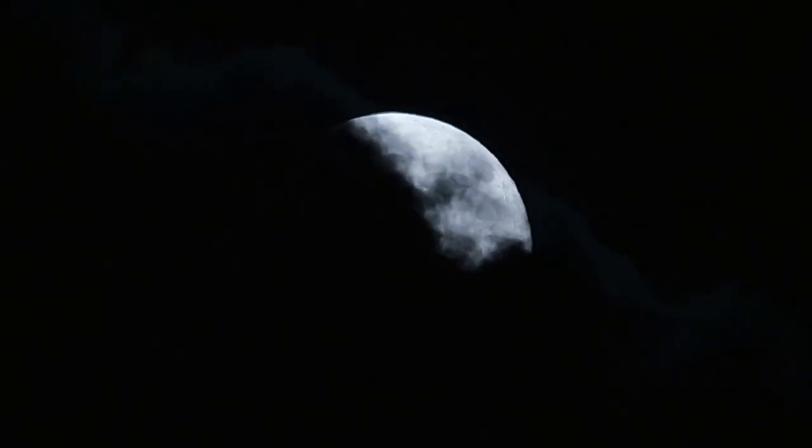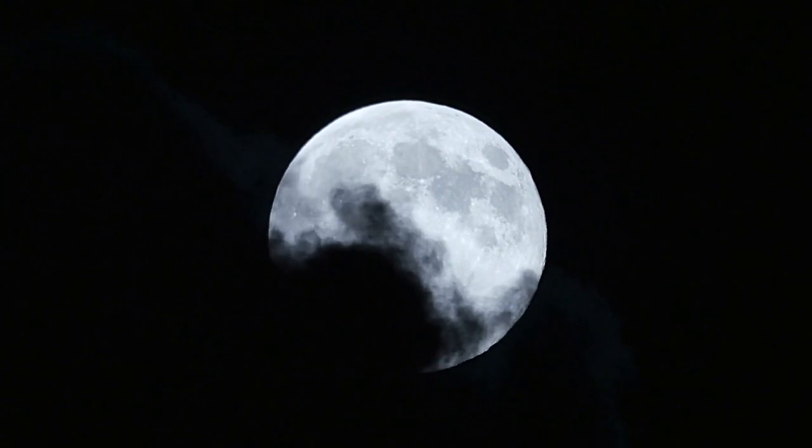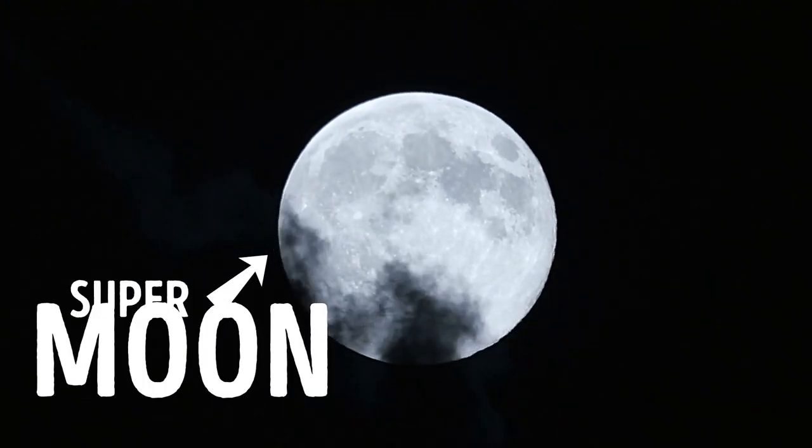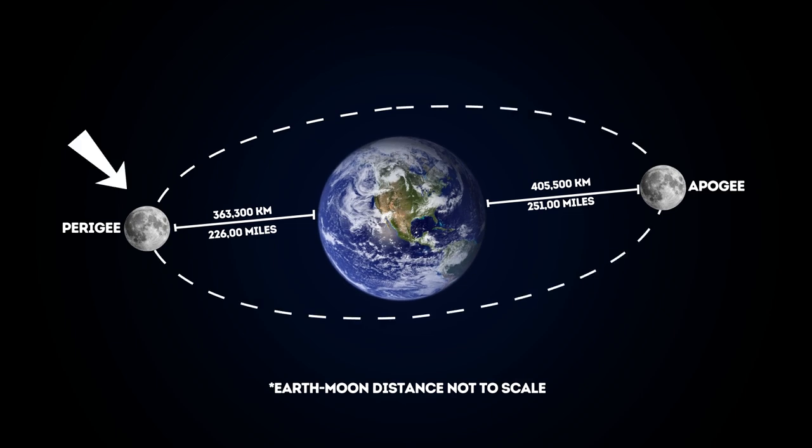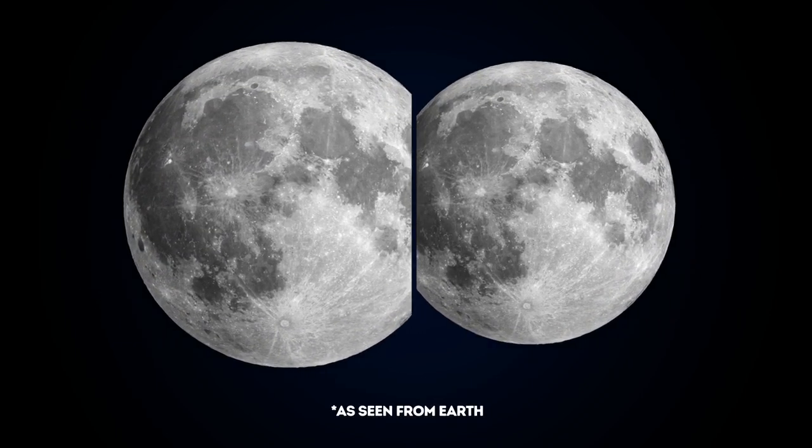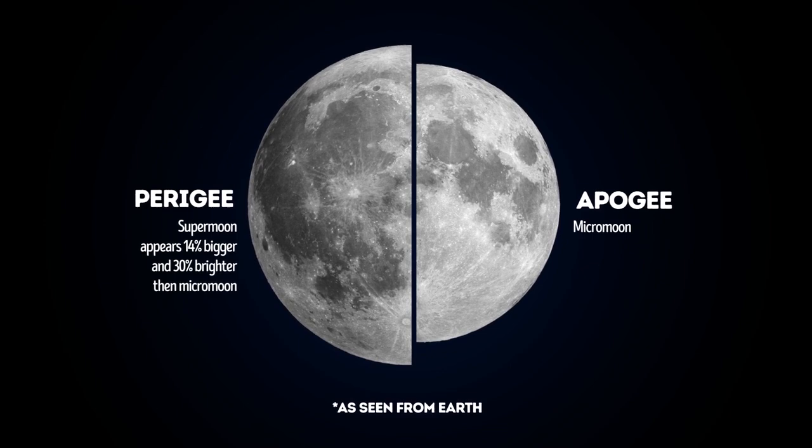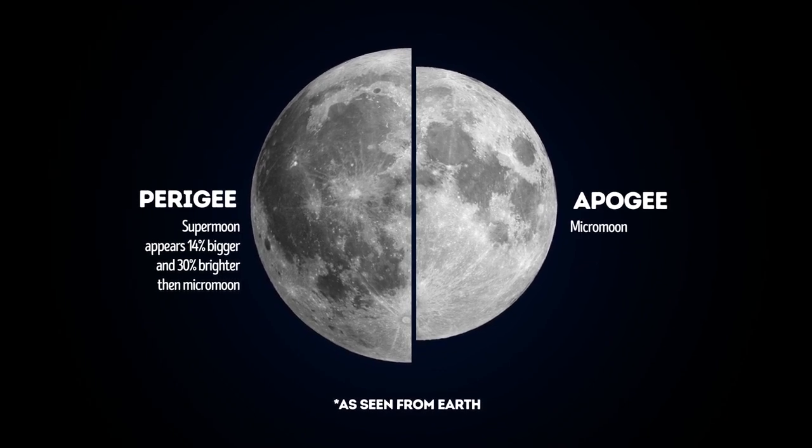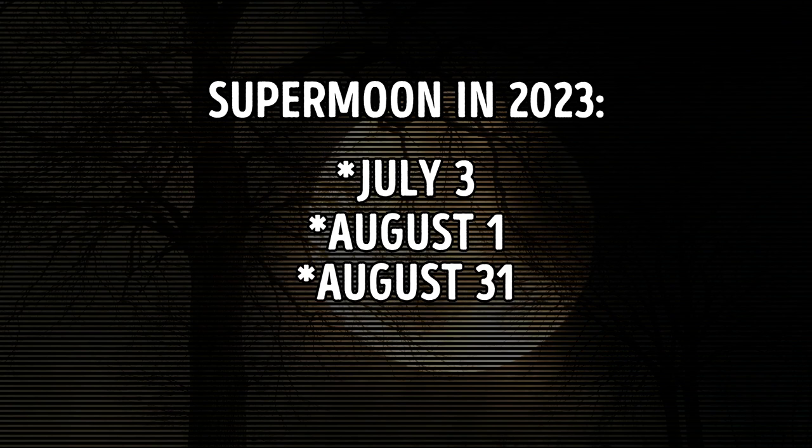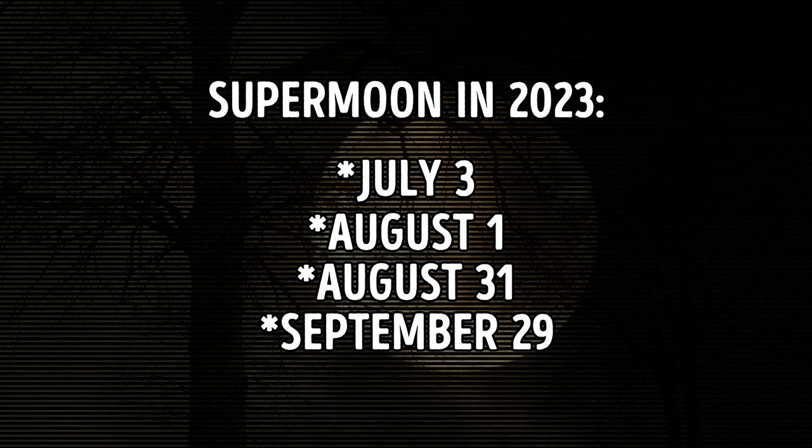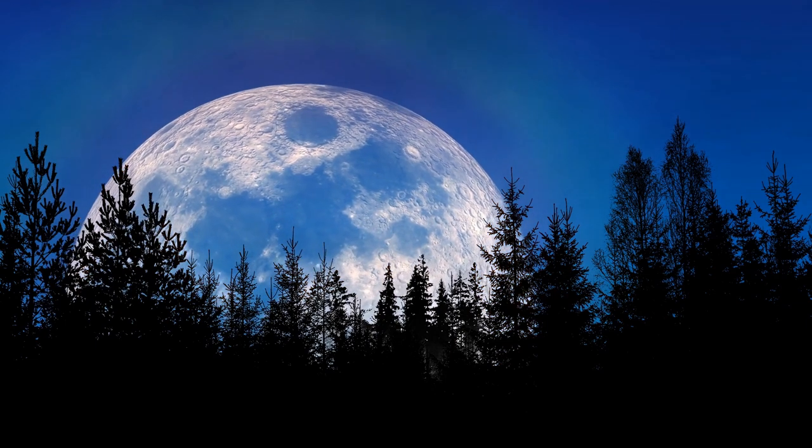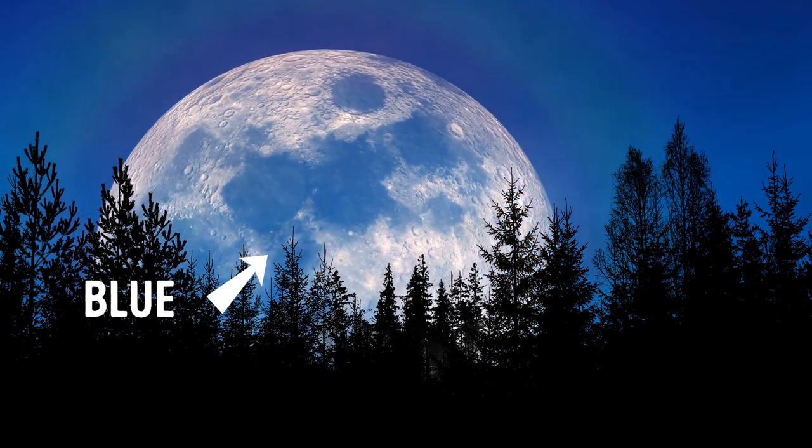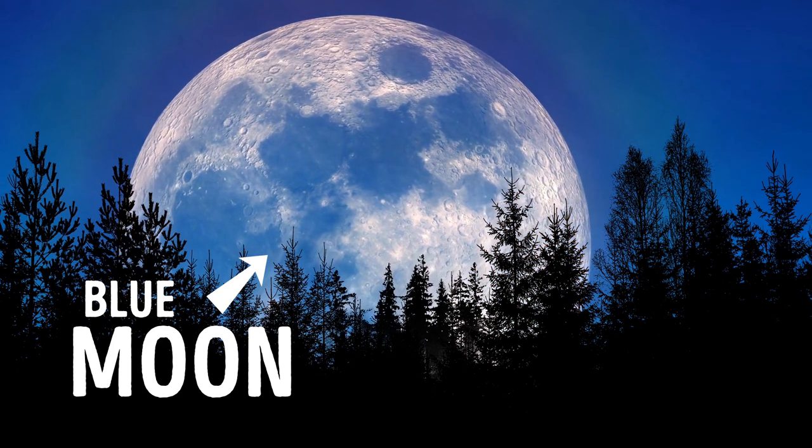On August 31st, you might notice that the full moon seems to be larger and brighter than usual. This phenomenon is called a supermoon. The moon, which follows an elliptical orbit, will be the closest to Earth. Even better, this year, there will be four supermoons. On July 3rd, August 1st, August 31st, and September 29th. And since there are two full moons in August, the second one is called a blue moon. It occurs every 2.5 years.